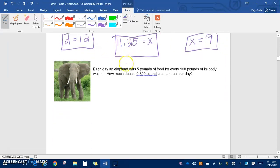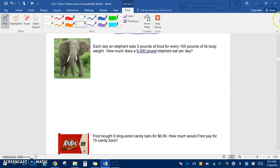Now we've got some word problems here. The first one says that each day an elephant eats 5 pounds of food for every 100 pounds of its body weight. How much does a 9,300-pound elephant eat per day? When we set these up, I want you to use some labels off to the side. You can put them in any order because we're not finding the unit rate right now. We're looking at how many pounds of food and then their body weight, so I'm going to put food over body.